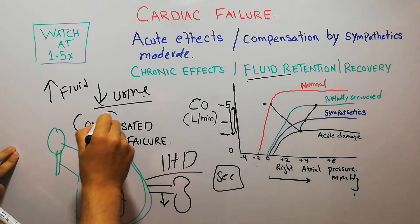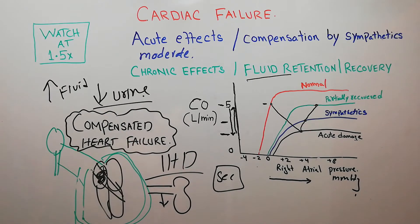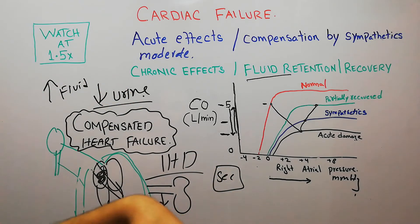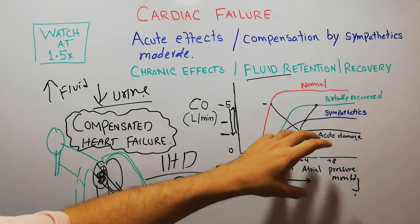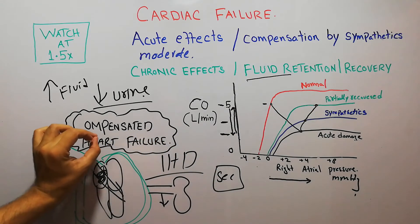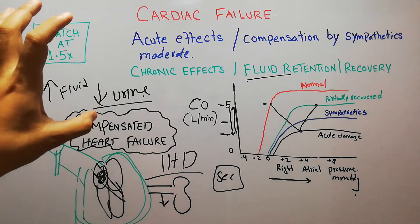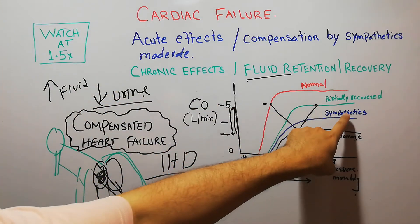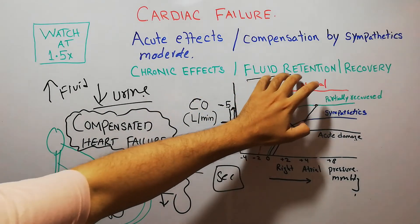When the cardiac output has been restored to the normal amount of 5 liters per minute, this is known as compensated heart failure. This compensation has occurred in the acute phase with the help of sympathetic nerve activation and in the chronic phase with the help of fluid retention.